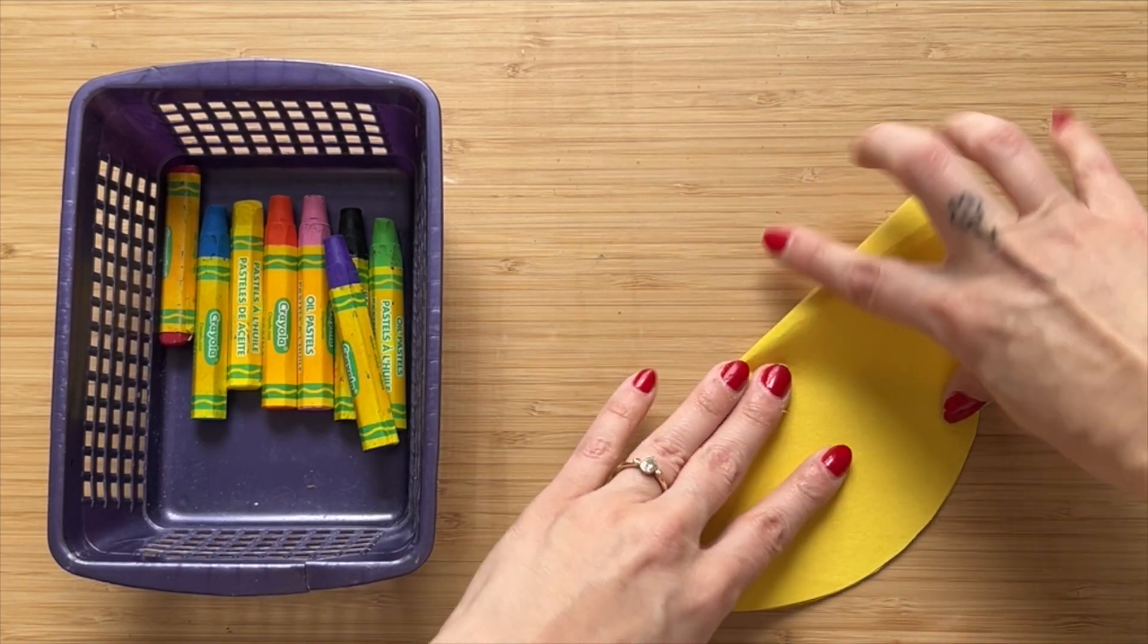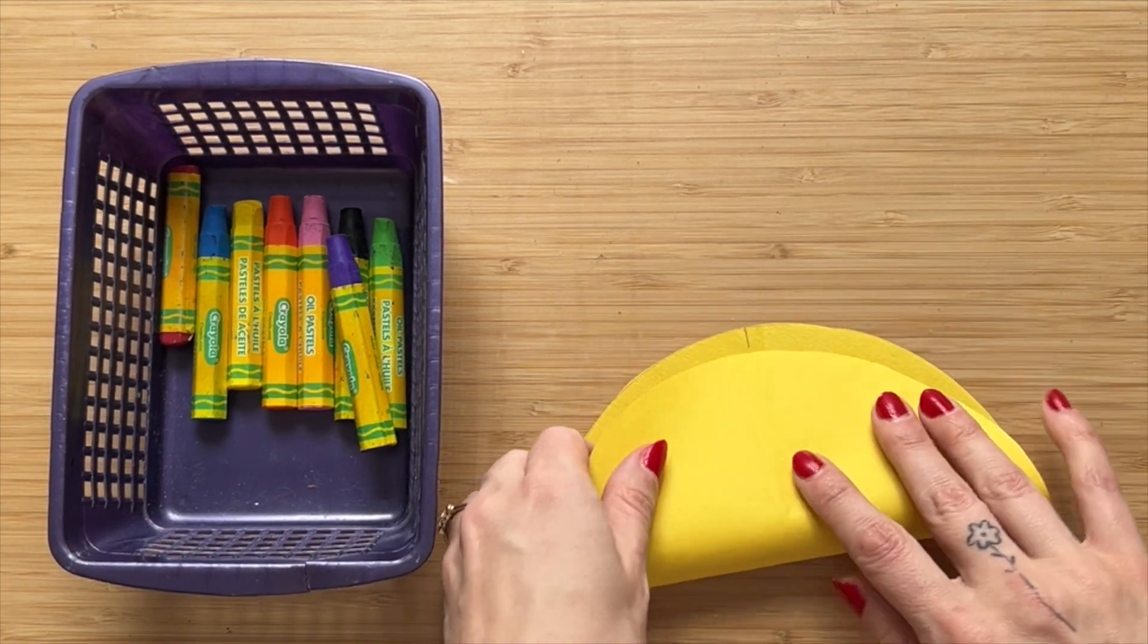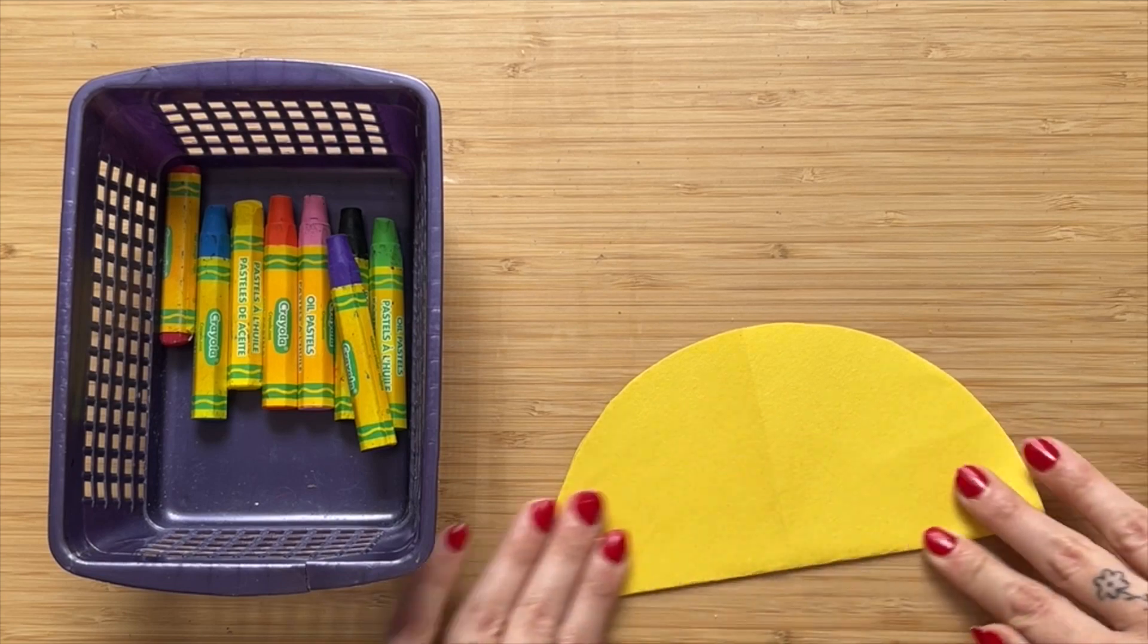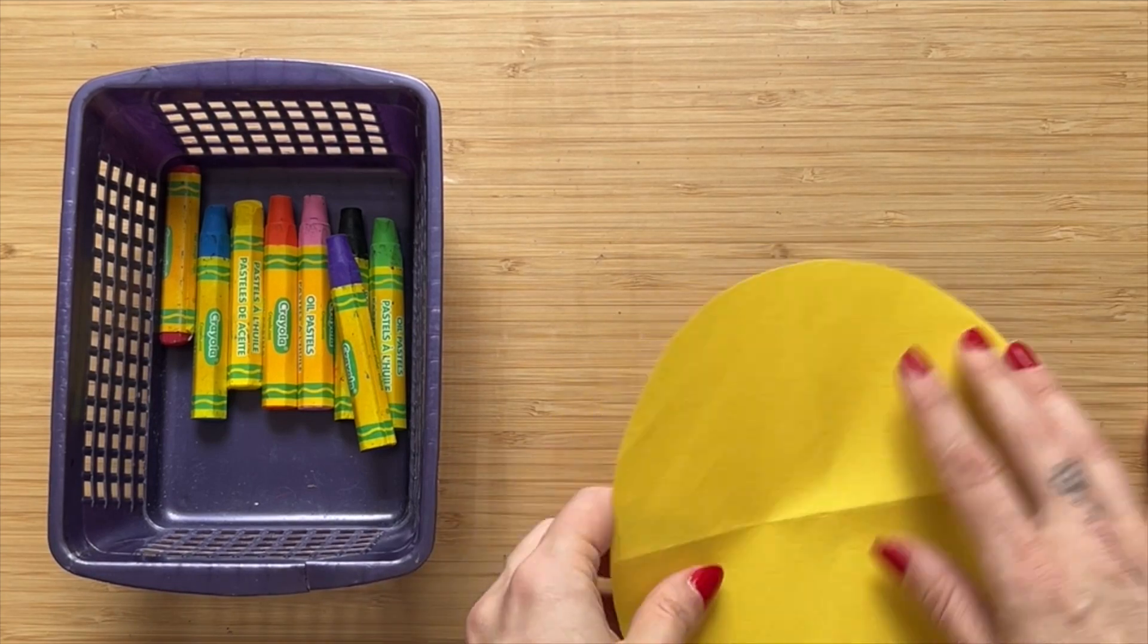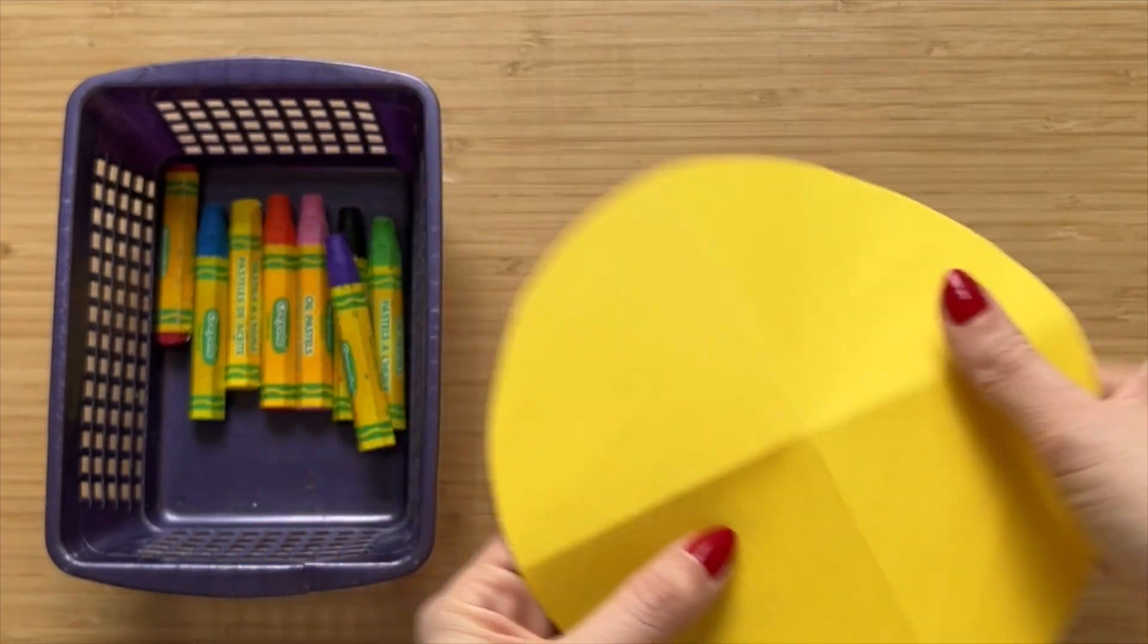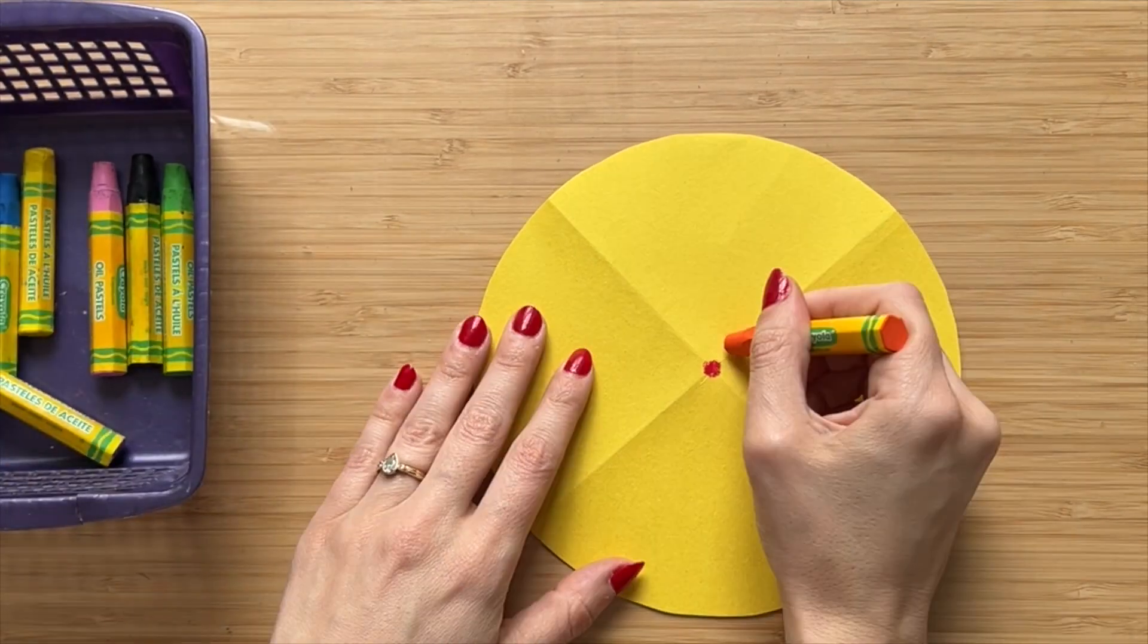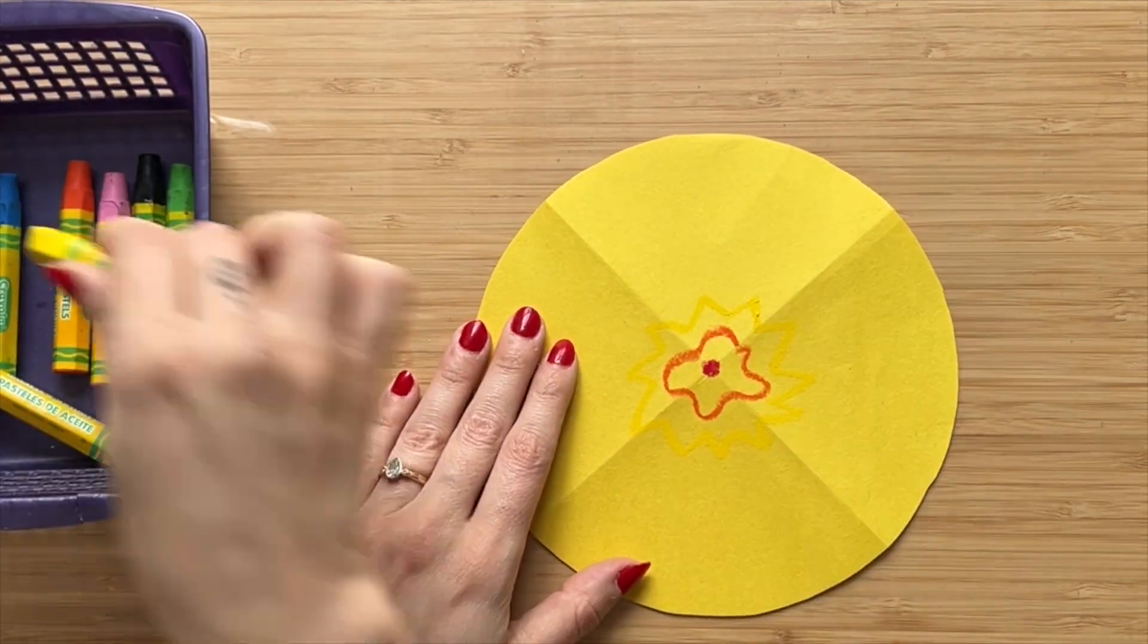If you're making a pattern where you want it to line up, you can go ahead and do that, and you won't see it in the final design because we're going to cut it anyway. Now, I know exactly where the center is. I'm going to put it flat, and now I can start making my design.